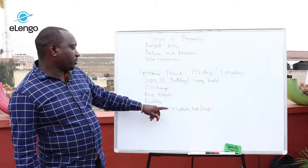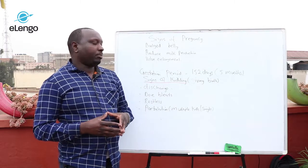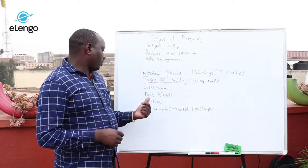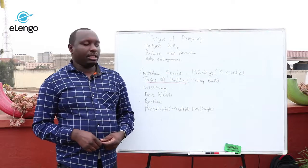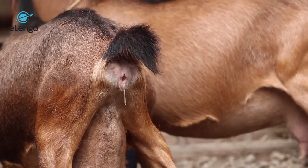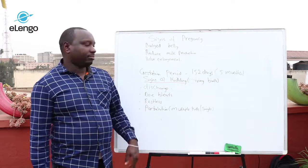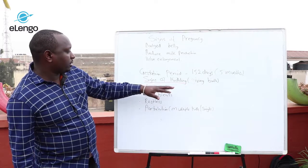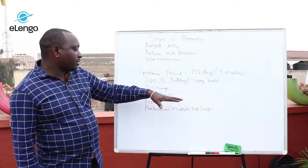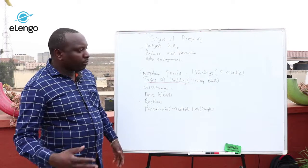The act of giving birth in does is called kidding, or parturition. Signs the doe shows when about to give birth include: discharge from the vulva — and in this case the discharge must be clear, not bloody or brown; any colored discharge before birth should ring an alarm. Another sign is bleating — the doe produces that sound — and also restlessness, with the doe continuously moving up and down.